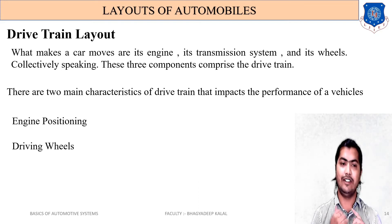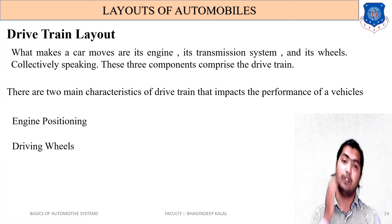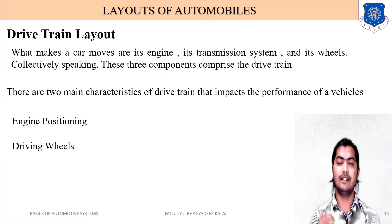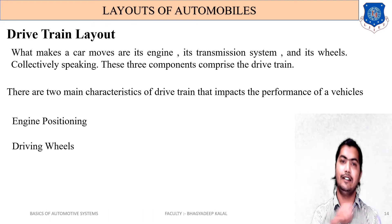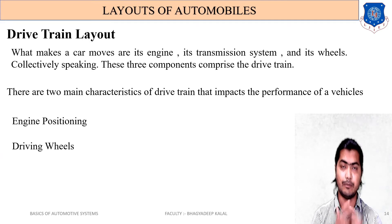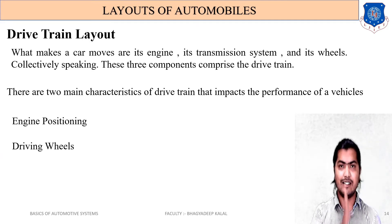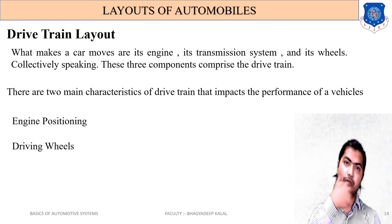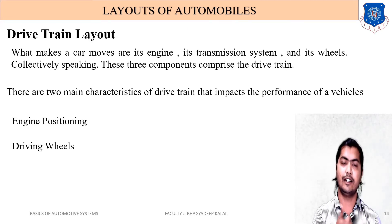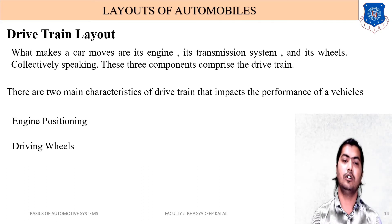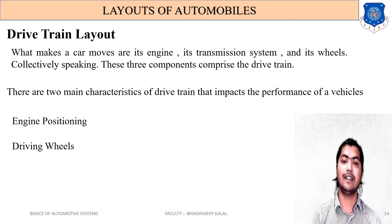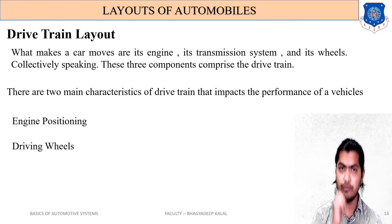There are two main characteristics of the drive train that impact vehicle performance. First is engine position — where the engine is mounted, either on the front side (front axle side) or the rear side. Second is the driving wheel — where the power is transmitted from the engine to the wheels. If power goes to the front wheels, it is front wheel drive; if to the rear wheels, it is rear wheel drive. These two characteristics — engine position and power transmission point — mainly impact vehicle performance.